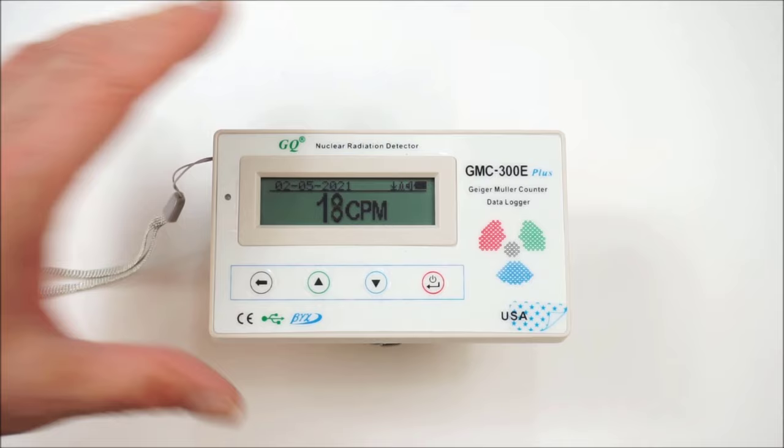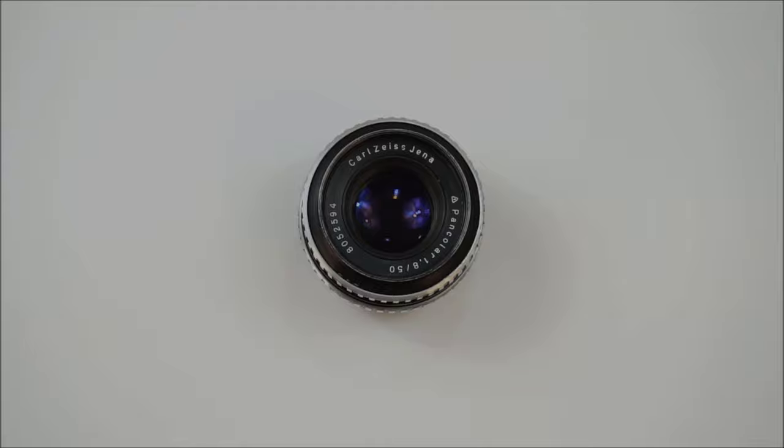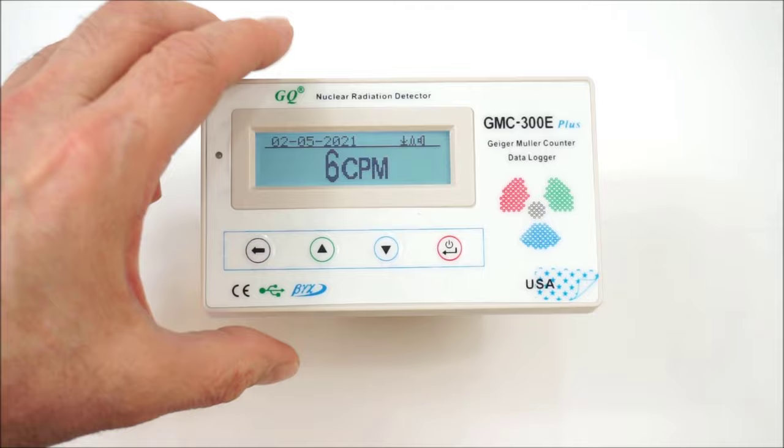Well, assuming the counter is working properly, it is picking up some radioactivity, more than in the room here. So now let's try it on the Carl Zeiss Jena Pancolor 50 f1.8, the version that has thorium in its glass.